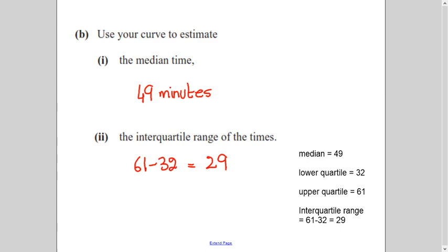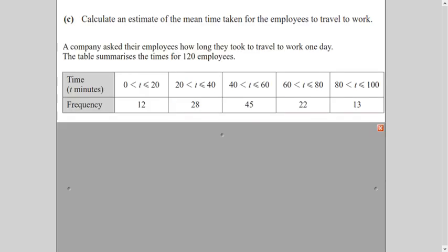In your answer space, write the median as 49 minutes and the interquartile range as 29 minutes. Always draw dotted lines on the graph to show your working. Part C of the question says: calculate an estimate of the mean time.